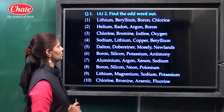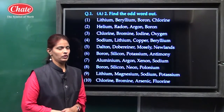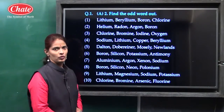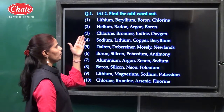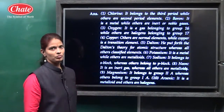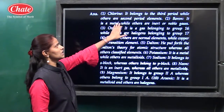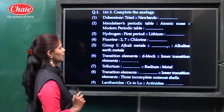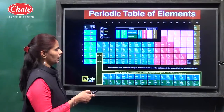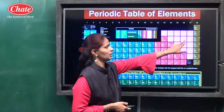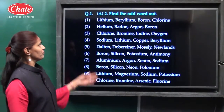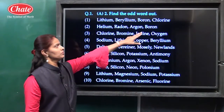Now see the next part of the chapter — there is a question: find the odd man out. First question: lithium, beryllium, boron, chlorine. The answer is chlorine because it belongs to the third period while the others are in the second period. Second question: helium, radon, argon, boron — the answer is boron because all the other elements belong to group 18, the noble gases.